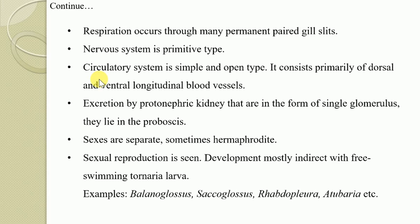The circulatory system is simple and open type — there are no closed vessels through which blood flows. It consists primarily of dorsal and ventral blood vessels which are contractile and lined by endothelium. These vessels communicate with sinuses and lacunae found in different parts of the body. A contractile heart vesicle is situated at the base of the proboscis above the central sinus of the dorsal vessel, making this an open type of circulatory system.